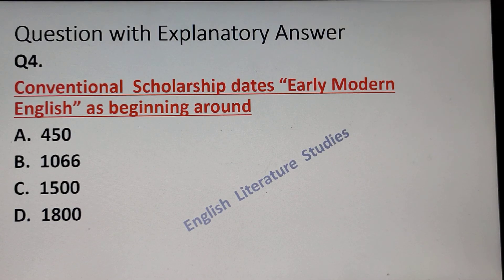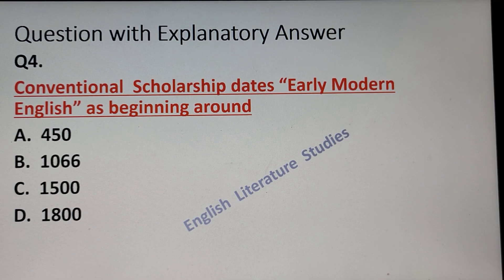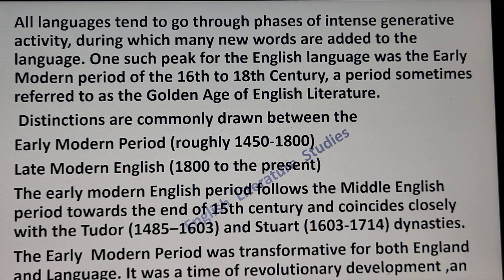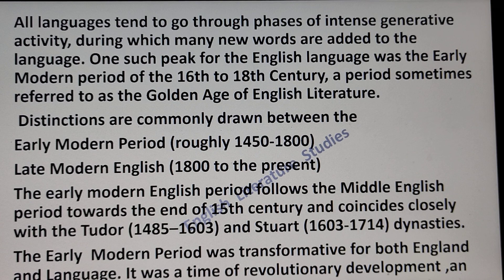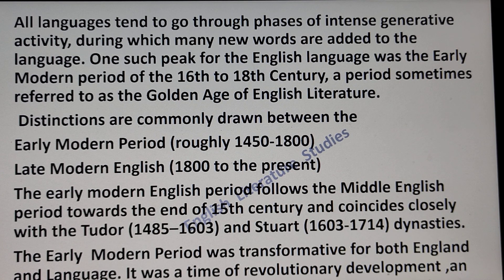Question number four: Conventional scholarship dates Early Modern English as beginning around — option A: 450, option B: 1066, option C: 1500, or option D: 1800. My answer is option C — 1500. All languages tend to go through phases of intense generative activity during which many new words are added. One such peak for the English language was the Early Modern period of the 16th to 18th century, sometimes referred to as a golden age of English literature. The Early Modern period is distinct from the Late Modern period. The answer is 1500, and I give these explanations so that it will be easier for you to remember, because knowing the basics is very important.